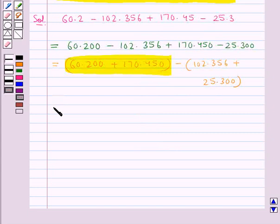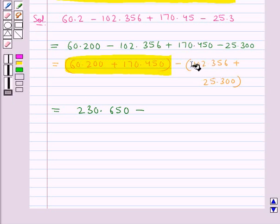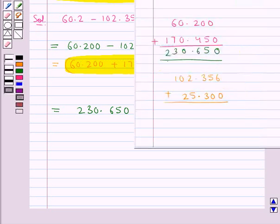So this is equal to 230.650 minus. Now let's add both these decimal numbers. On adding these two decimal numbers we get 127.656.